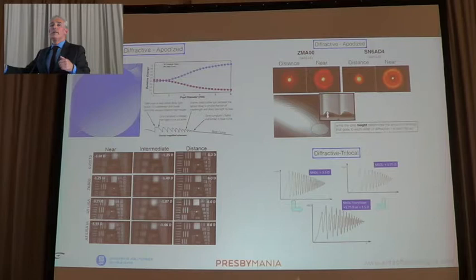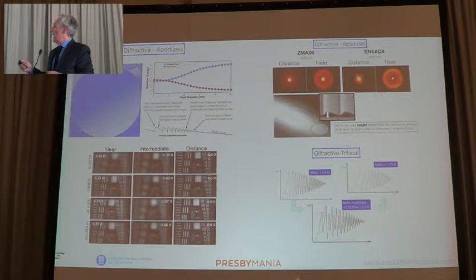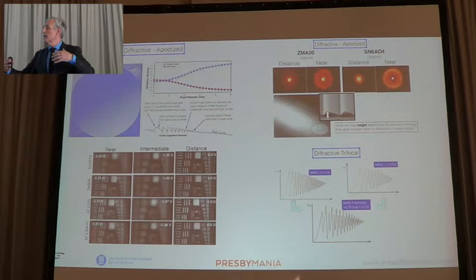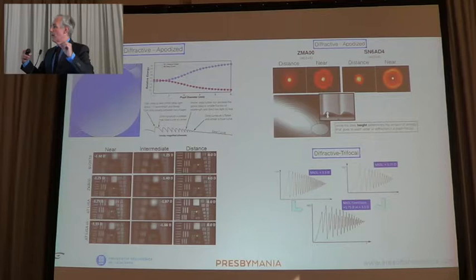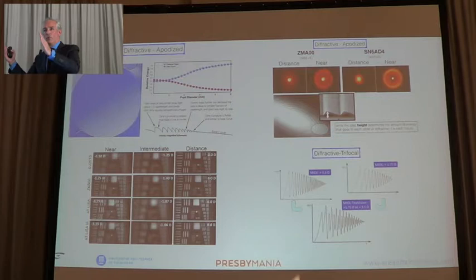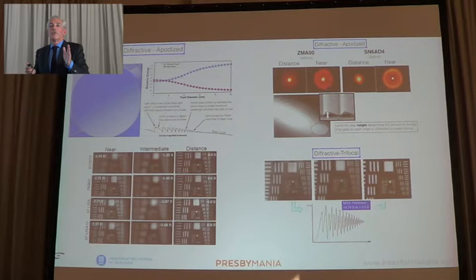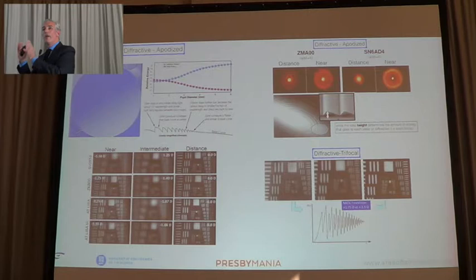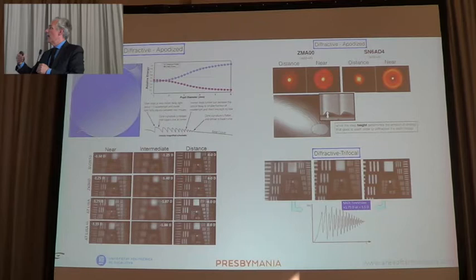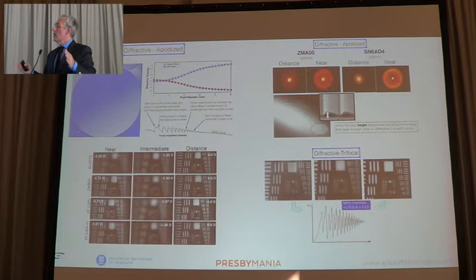In the next generation, we have the trifocal lenses by Physiol. Why did they do this? Because they tried to solve intermediate vision — they used a mathematical algorithm, applied Fourier analysis, and created different rings that, with this modification, provide three focal points. We can see better intermediate vision, but not much better, because the energy is now divided into not two but three focals — so we lose a lot of energy. These patients may feel better for intermediate vision, but if they have a retinal problem or develop maculopathy in the future, they will have many problems because contrast sensitivity and light energy are not adequate. I think it's not the best approach — this is my opinion.